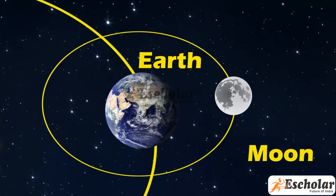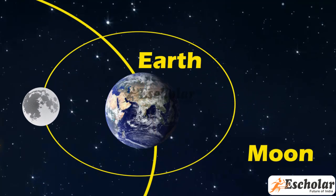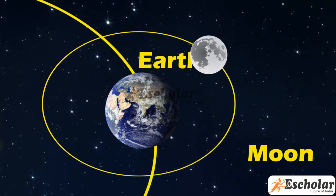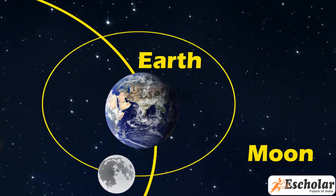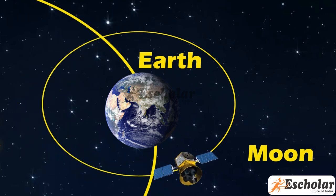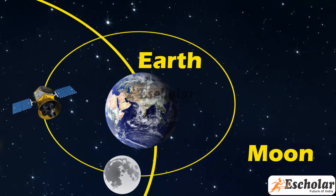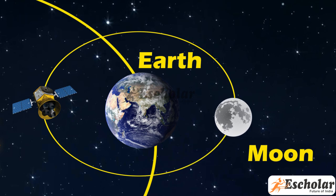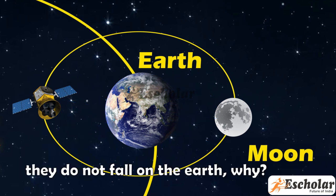The gravitational force due to the earth also acts on the moon because of which it revolves around the earth. Similar situation exists for the artificial satellites orbiting the earth. The moon and the artificial satellites orbit the earth. The earth attracts them towards itself but unlike the falling apple, they do not fall on the earth. Why?